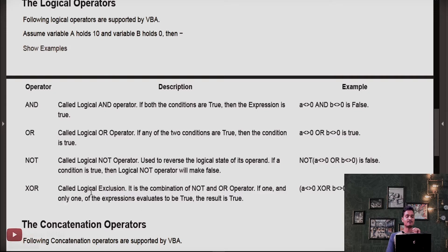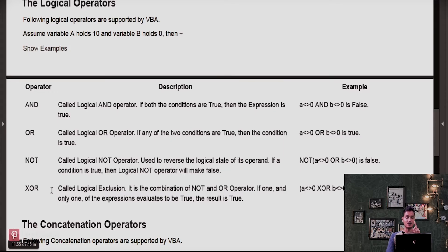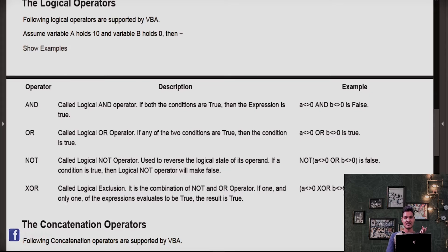Now the XOR operator — called logical exclusion. It is the combination of NOT and OR. If one and only one of the expression values is true, then the result is true. For example, A not-equal-to 0 is true, so we can directly write the result as true.